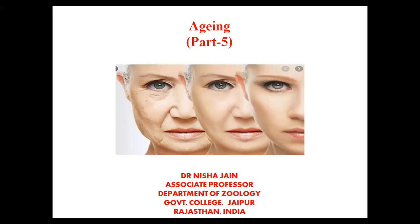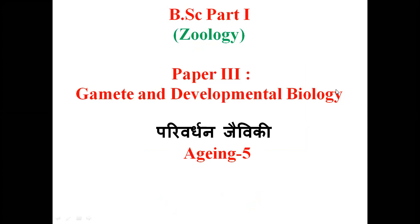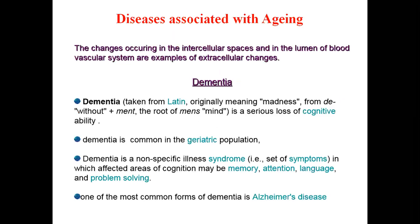Hello students, myself Dr. Nisha Jen, Associate Professor. Today I am starting Part Five of the Genetics and Aging chapter, for BSc Part One Zoology Paper Three - Gamete and Developmental Biology. We have already completed parts one through four, and today we will cover the fifth and last part: diseases associated with aging - which diseases come with old age.